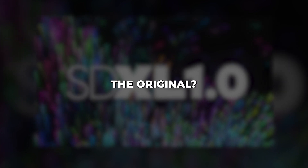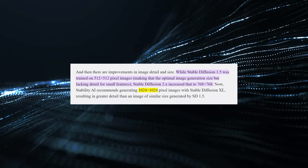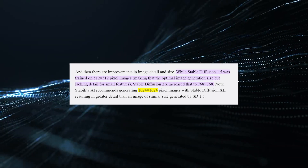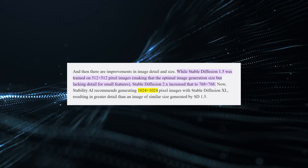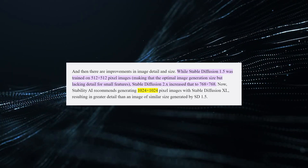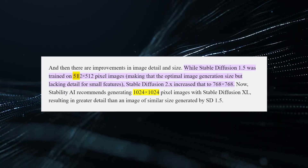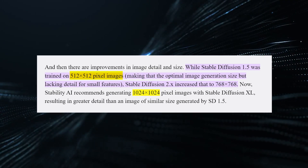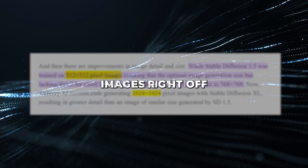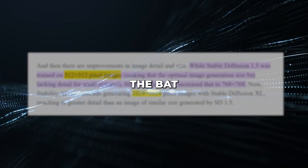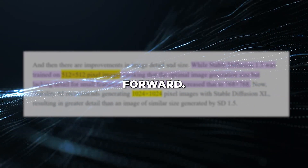So what are some of the key capabilities of Stable Diffusion XL versus the original? Firstly, SDXL can generate images directly at 1024x1024 resolution. The original Stable Diffusion maxed out at 512x512, so being able to produce high-resolution images right off the bat is a huge leap forward.